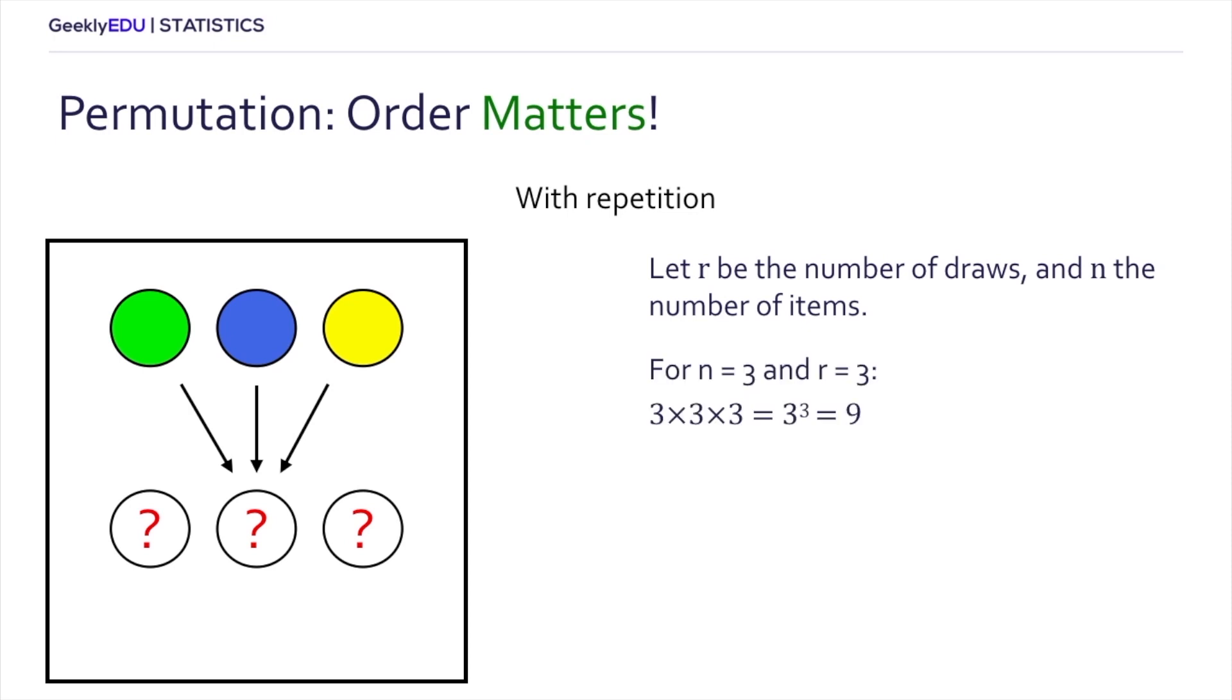We can express the formula as n to the power of r. And so in our case here, n equals three and r equals three, so there's a total of nine possible permutations.